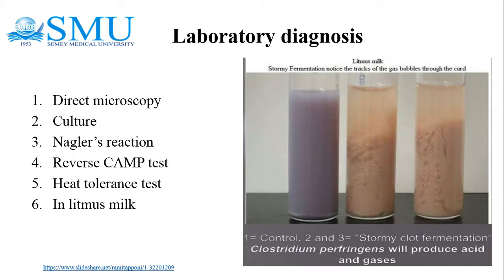Laboratory diagnosis of Clostridium perfringens includes direct microscopy, culture methods, Nagler's reaction, reverse CAMP test, heat tolerance test, and litmus milk test. In litmus milk, stormy clot fermentation produces acid and gas, visible as tracks of gas bubbles through the curd.